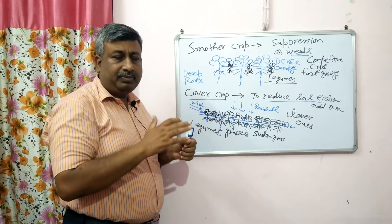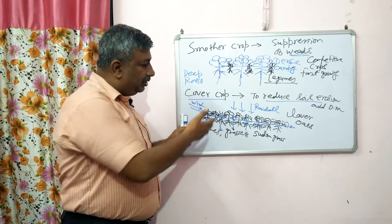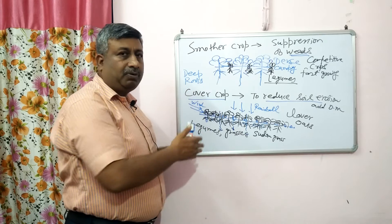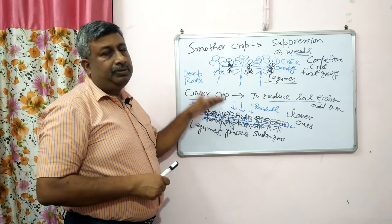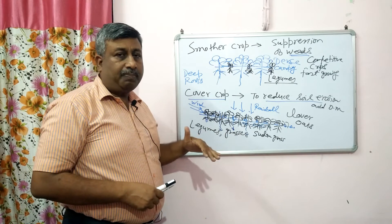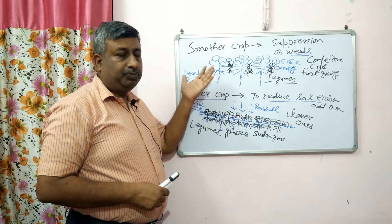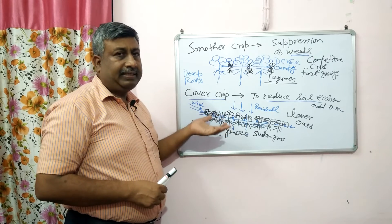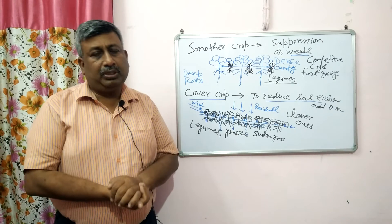Smother crops are grown as a main crop or as an intercrop, so they give the additional advantage of yield. While in the case of cover crops, these do not give the additional advantage of yield, but check soil erosion. If there is an open field where no crop is being grown, we should grow a cover crop — first, soil erosion is reduced; second, grasses grown as cover crops provide fodder for animals. This is the difference between smother crop and cover crop. Legumes may be grown as a smother crop or as a cover crop depending on our objective: if growing as a main or intercrop to reduce weeds, it acts as a smother crop; if growing to check soil erosion, it acts as a cover crop. Both grasses and legumes can be used as cover crops. Thank you very much.